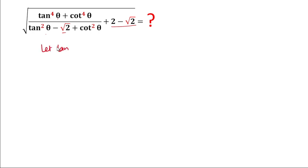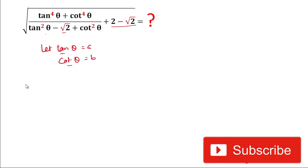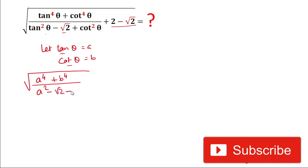For solving this problem, we will let tan θ = a and cot θ = b. After putting the values of tan θ and cot θ as a and b, our new expression becomes: under root of (a⁴ + b⁴) divided by (a² − √2 + b² + 2 − √2), and all values are under the root.